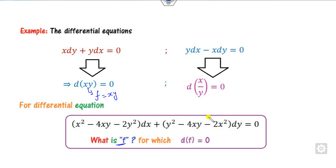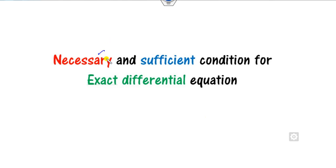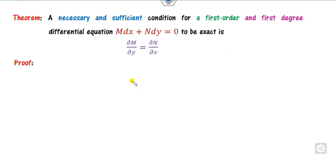To solve such problems, we need some necessary and sufficient condition for the differential equation to be exact. Any differential equation of the first order and first degree, M dx + N dy = 0, is exact when the partial derivative of M with respect to y and the partial derivative of N with respect to x are the same, i.e., ∂M/∂y = ∂N/∂x.